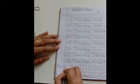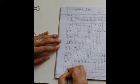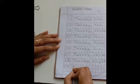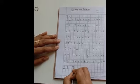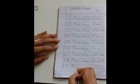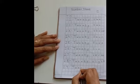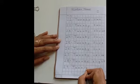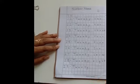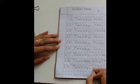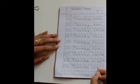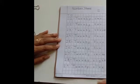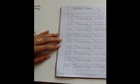Now the next number is 29. T-W-E-N-T-Y, 20, N-I-N-E, 9. 29.